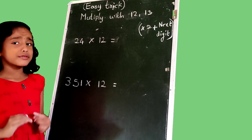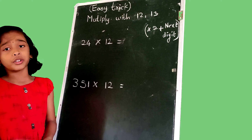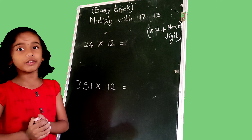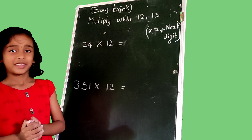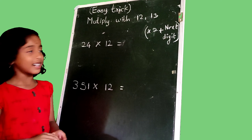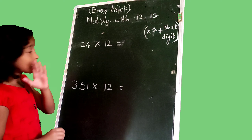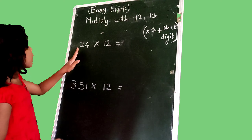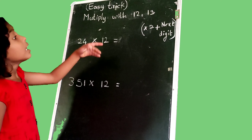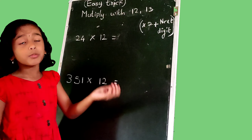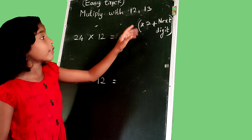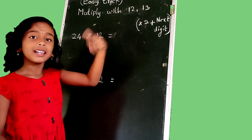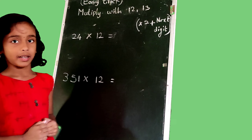Hi friends, first today we are going to know a very easy trick to multiply with 12. Now start. Example: 24 multiply with 12. The formula is multiply with 2 and add the next number.